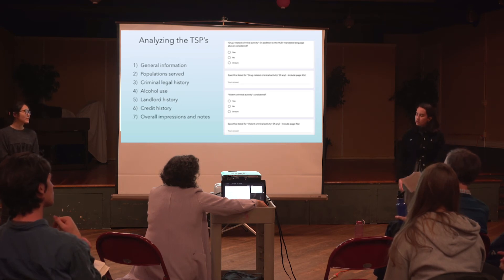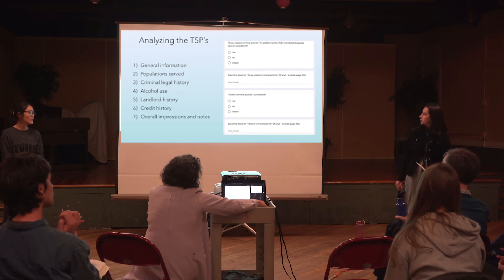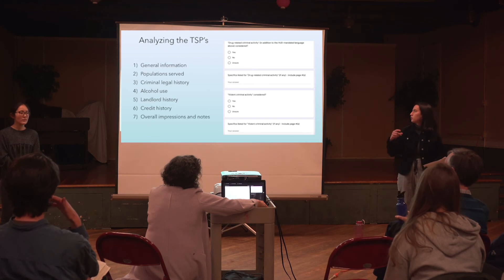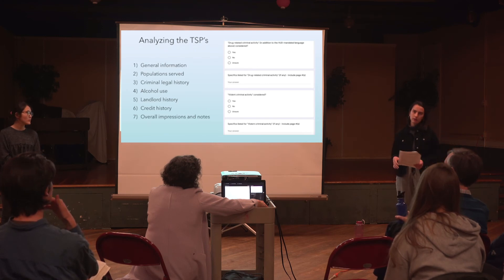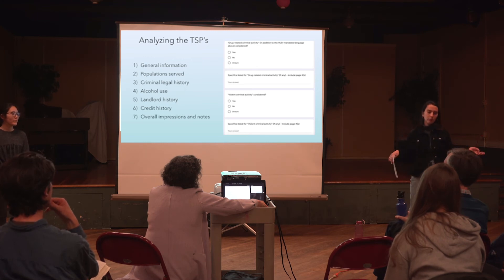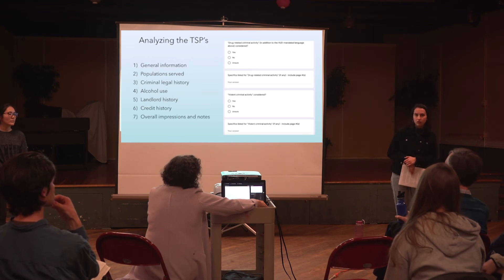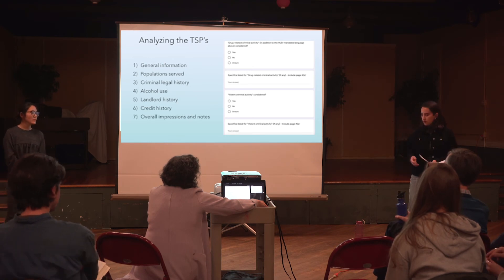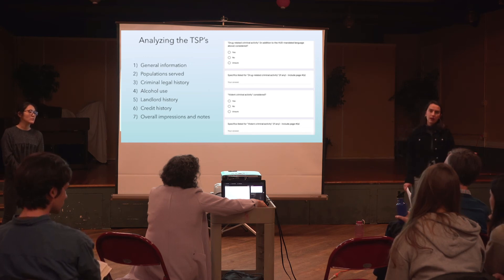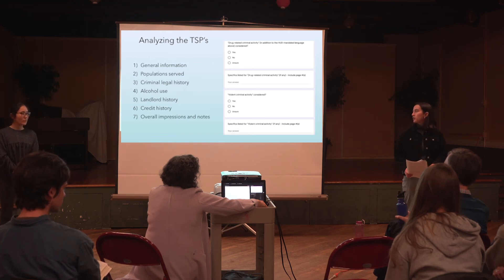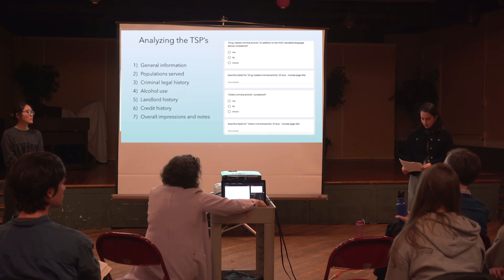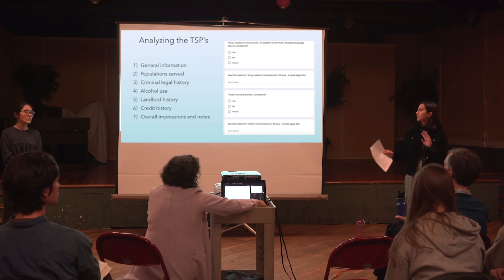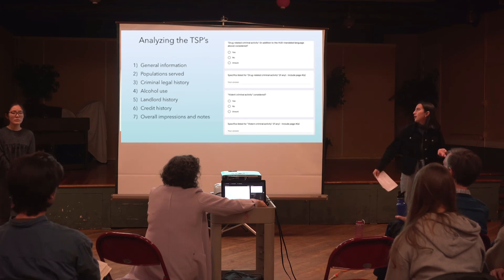Some of the things we wanted to pay attention to include look-back periods for criminal history — how many years back will housing providers consider a potential tenant. We also looked at different levels of vagueness in language. Some TSPs said they reject an applicant based on 'poor credit history' without anything else — if you're applying and you just see that phrase, you don't know what it means for you. Others were more specific, mentioning bankruptcy in the past 10 years. There was really a lot of variation.